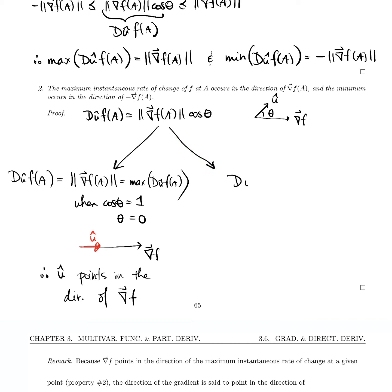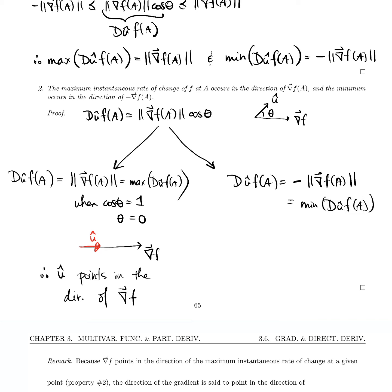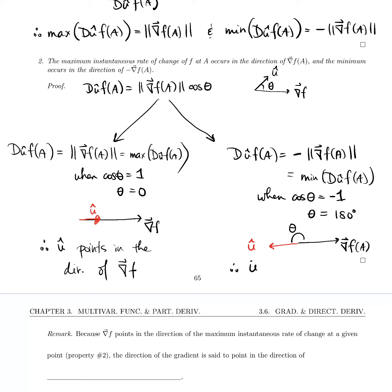In the direction of the gradient, the directional derivative will equal the negative norm of the gradient, which is the minimum value that the directional derivative can take. That will be true when cos θ equals minus one. If cos θ is minus one, then θ is one hundred and eighty degrees, meaning our vector u-hat is pointing in the opposite direction to the gradient.